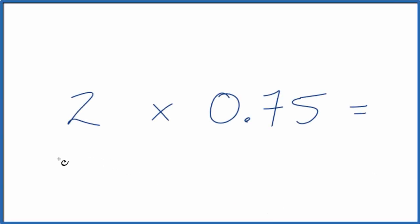Someone asked me to multiply 2 times 0.75. How do you do that? And there are actually a few ways to think about this.